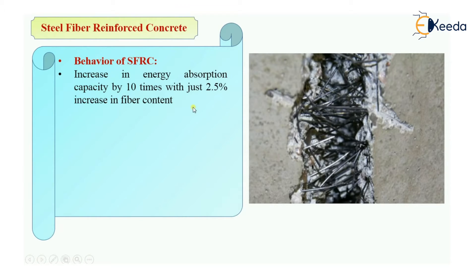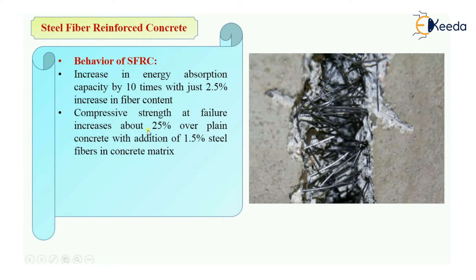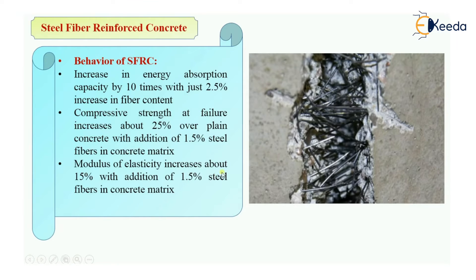These are results from tests performed on concrete with steel fibers, using 1 percent, then 1.5 percent, then 2 percent and increasing. Compressive strength at failure will increase by 25 percent over normal plain cement concrete with addition of just 1.5 percent steel fibers. The modulus of elasticity will also increase about 15 percent with the addition of 1.5 percent of steel fibers.